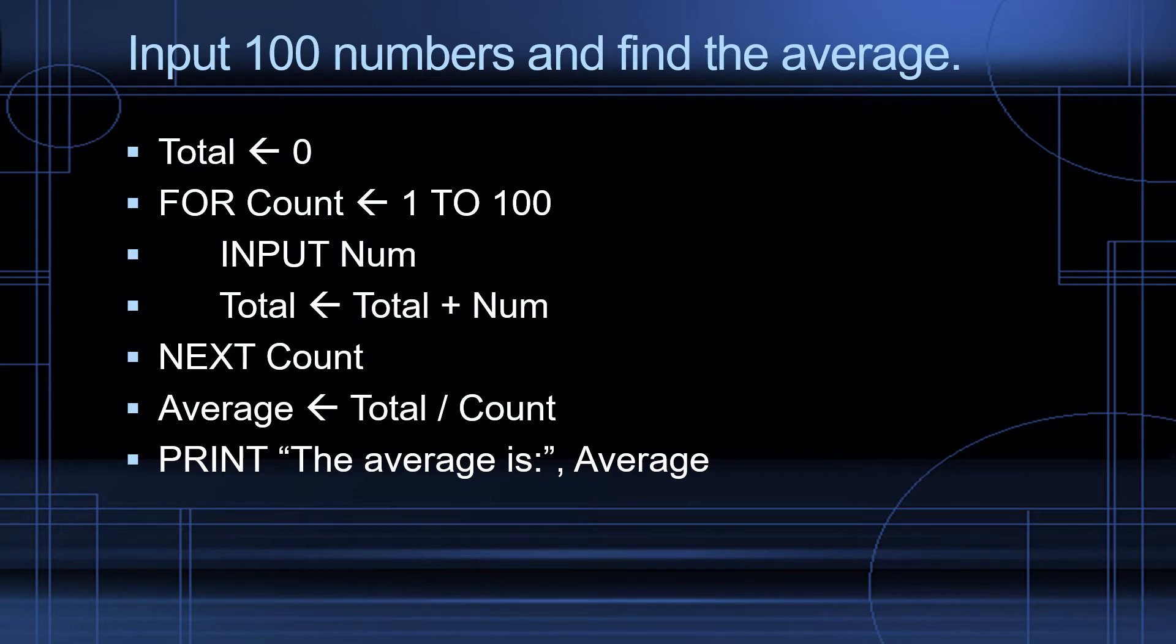We're going to instruct the computer to do the same thing. We start by initializing total to zero, for count, count runs from 1 to 100. We input each number and keep adding it to our total, total equals total plus num, next count. This will repeat 100 times. Finally, once we have the total of the 100 numbers, we're ready to calculate. Average equals total divided by count. Print, the average is average.